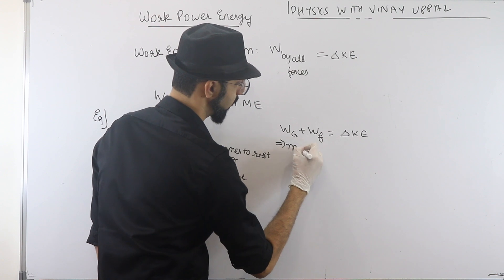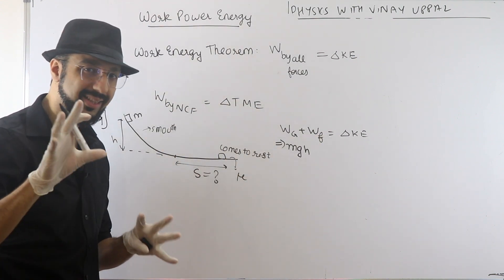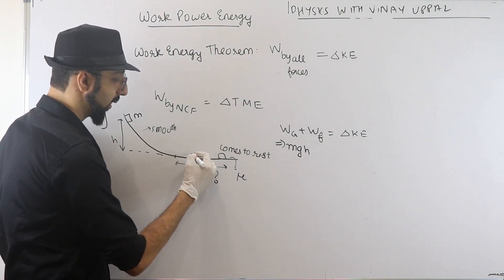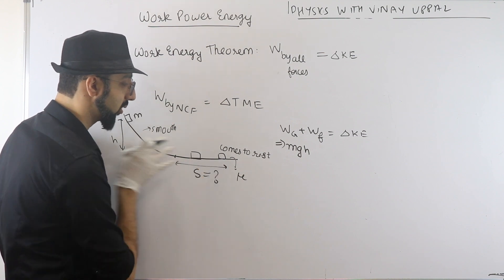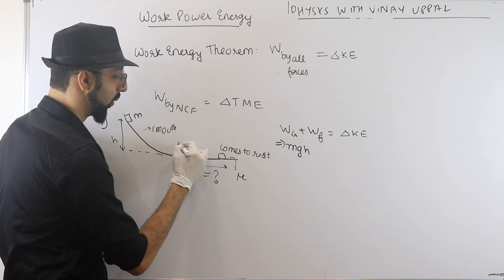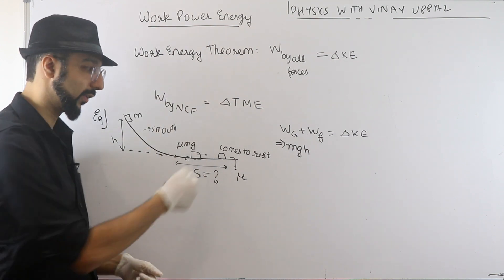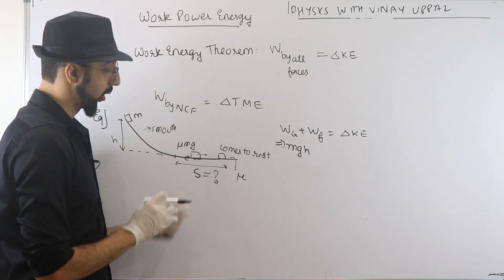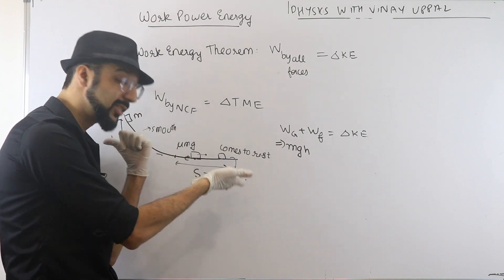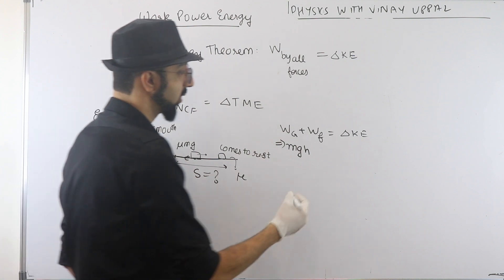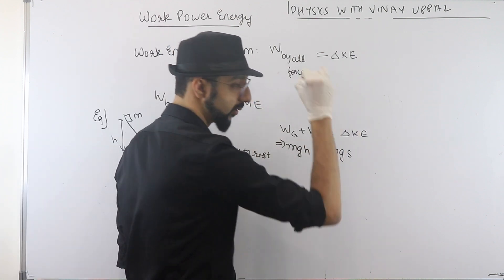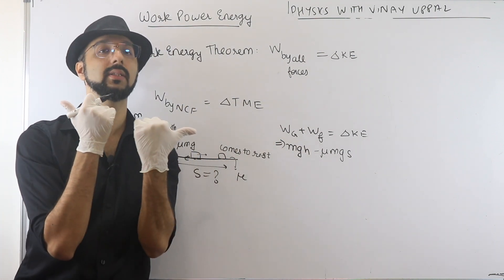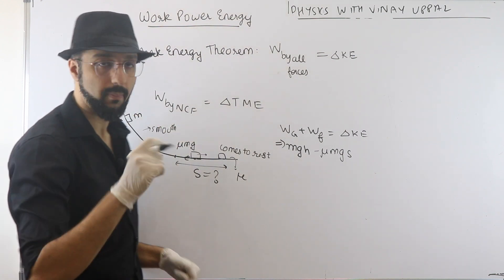How much friction is acting? If the block is traveling to the right, friction acts to the left — that's mu·mg. Friction is to the left, displacement is to the right, and the angle between them is 180°. So in the dot product we get −1, and work done by friction is −μmgS. What about the change in kinetic energy? Initially at rest, finally at rest — so it's zero.